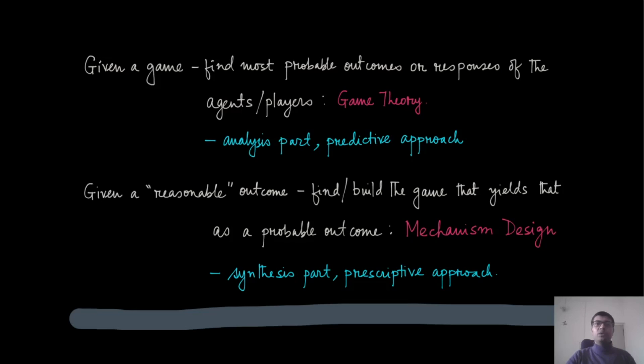In the game theory part, what we try to do is find out the probable outcomes or responses of these players. This is the analysis part as we discussed, and this is a predictive approach. We are going to predict what happens in this kind of a game.